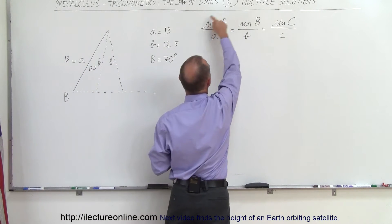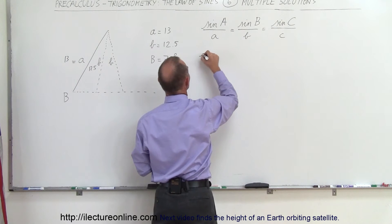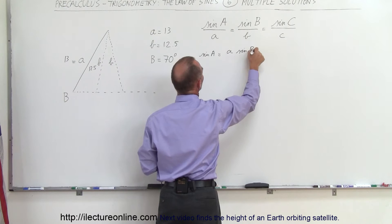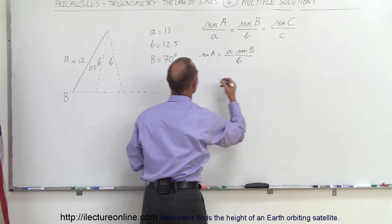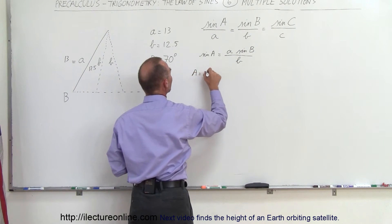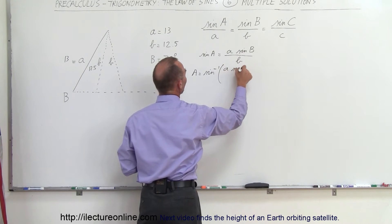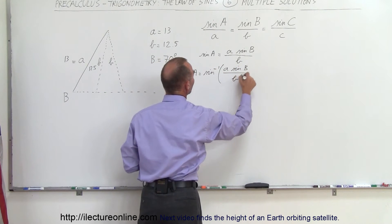That means we're going to use this portion of the equation. The sine of A is equal to A times the sine of angle B divided by side B. That means angle A would be equal to the inverse sine of the quantity A times sine of B over B.